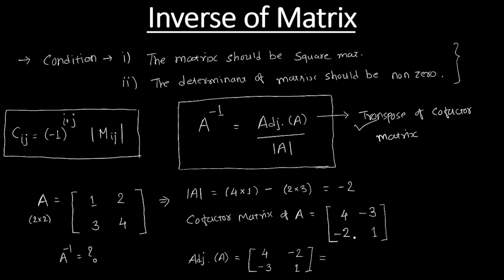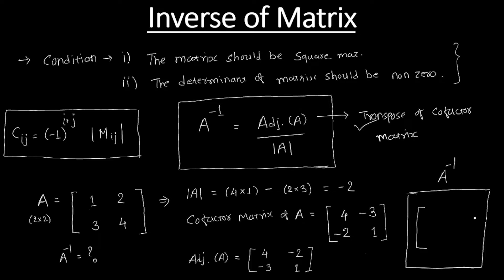The adjoint of A, which is the transpose of the co-factor matrix, is: 4, minus 2, minus 3, 1. Then A inverse, which is adjoint of A divided by determinant of A (which is minus 2), gives us: 4 divided by minus 2 equals minus 2; minus 2 divided by minus 2 equals 1; minus 3 divided by minus 2 equals 1.5; and 1 divided by minus 2 equals minus 0.5. This is how we calculate the inverse of any 2×2 matrix.